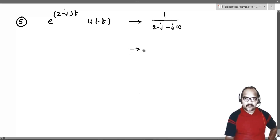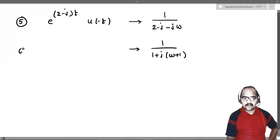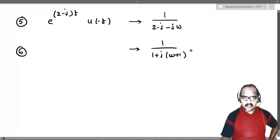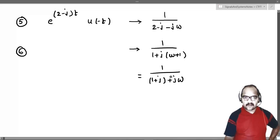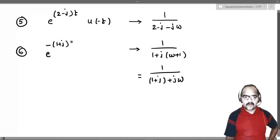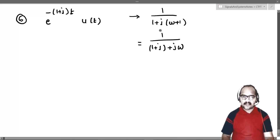Now let us take the other side — the sixth example. We have 1 by 1 plus j times omega plus 1, and we want to find the signal. This function can be written as 1 by 1 plus j plus j omega, which looks like 1 by a plus j omega. So the corresponding signal should be e power minus of 1 plus jt multiplied with u of t.